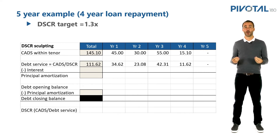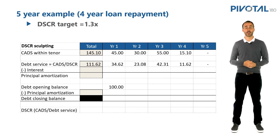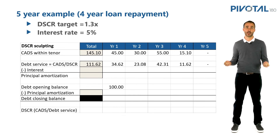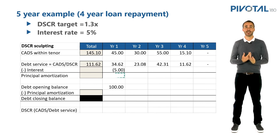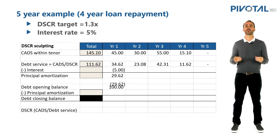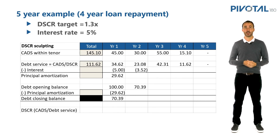Let's say we have a loan of 100 million dollars. We start with 100 million in year one. Our interest is simply our interest rate times that balance — so with a 5% interest rate, our interest is 5 million. Our total debt service in year one was 34.6 million and our interest was 5 million, so our principal amortization is 29.62 million — debt service minus interest. We're repaying 29.6 million off our loan to end up with a closing balance of 70.39 million. We repeat the same calculation for years two, three, four, and five.